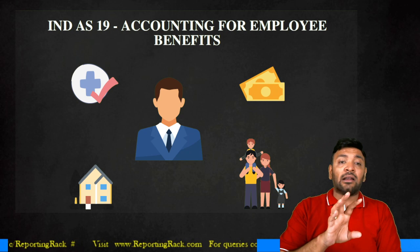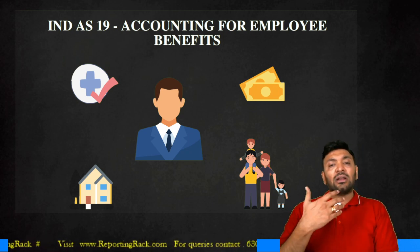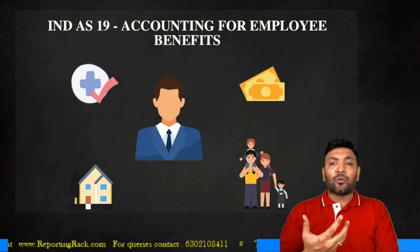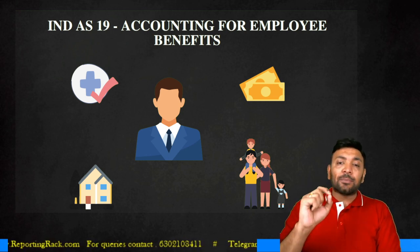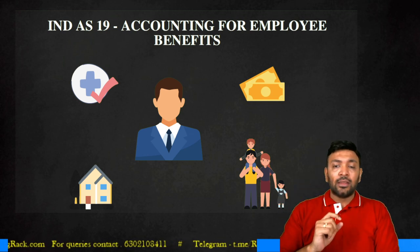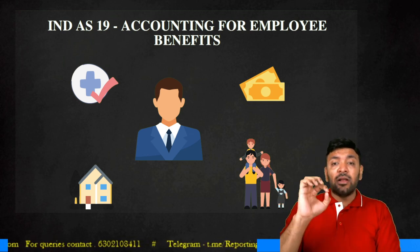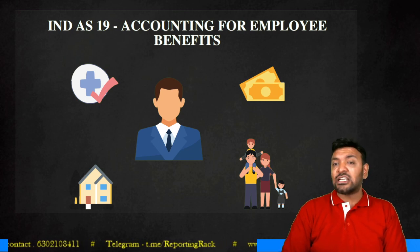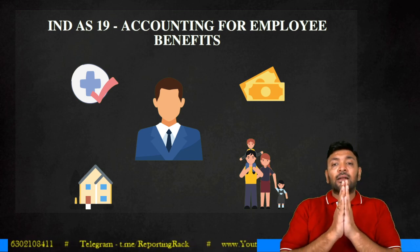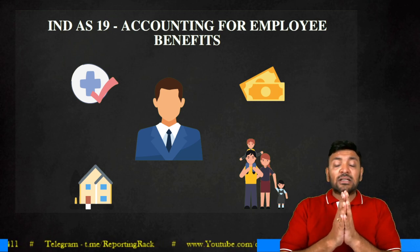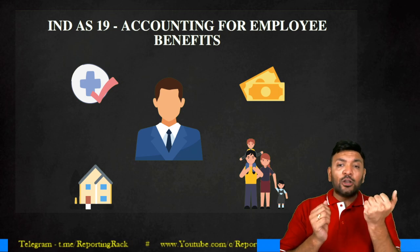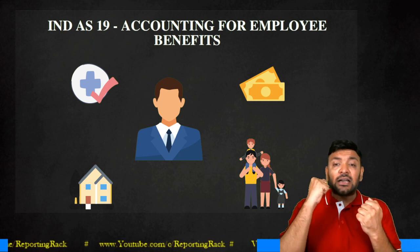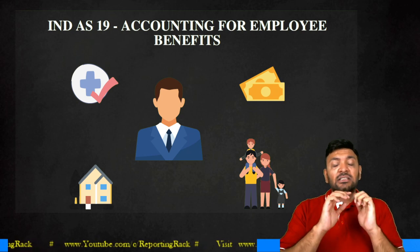So whenever I use the word employee under Ind AS 19, such employee could either be a past employee or a present employee. Future employees cannot be known, so there is no point covering them. An employee is a person where there is an employer-employee relationship which exists. The standard makes a distinction between principal-to-principal contracts and principal-to-agent contracts. Principal-to-agent contracts are covered under the definition of employee, but principal-to-principal contracts are not covered.